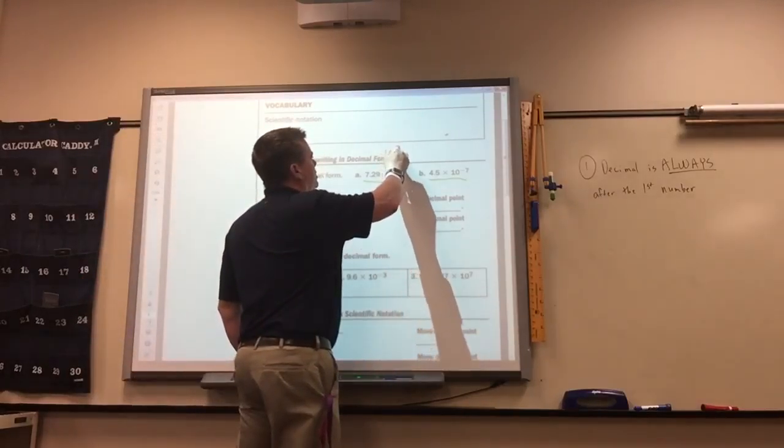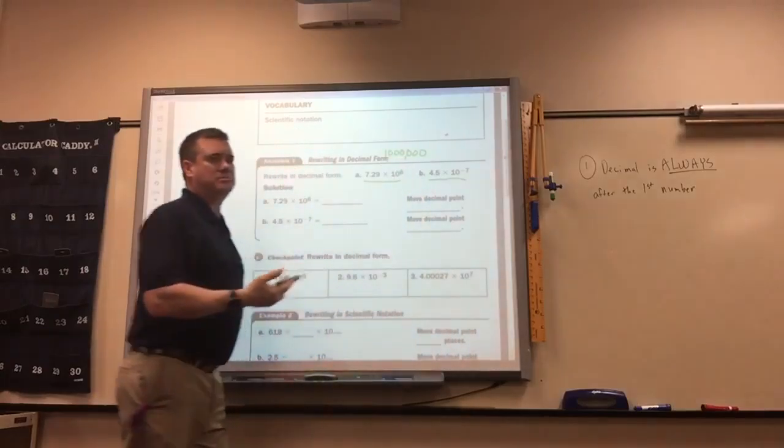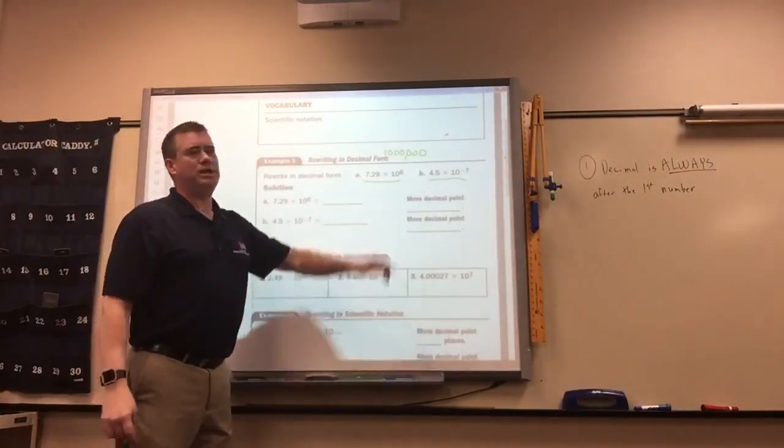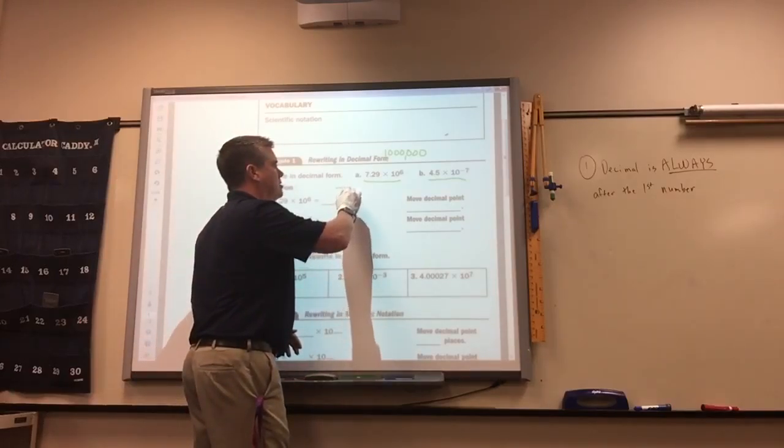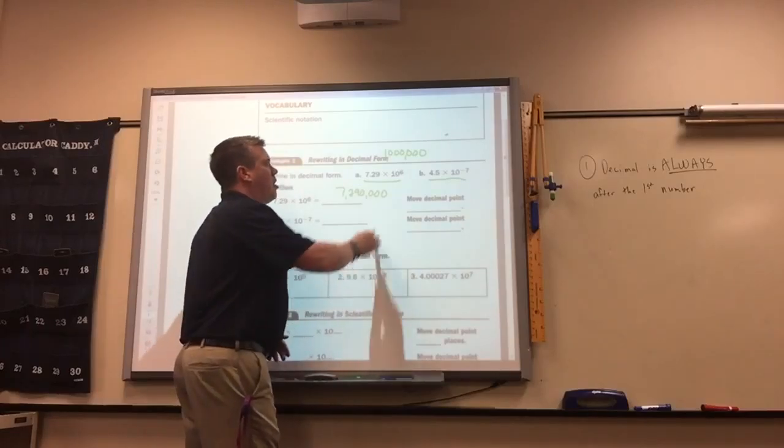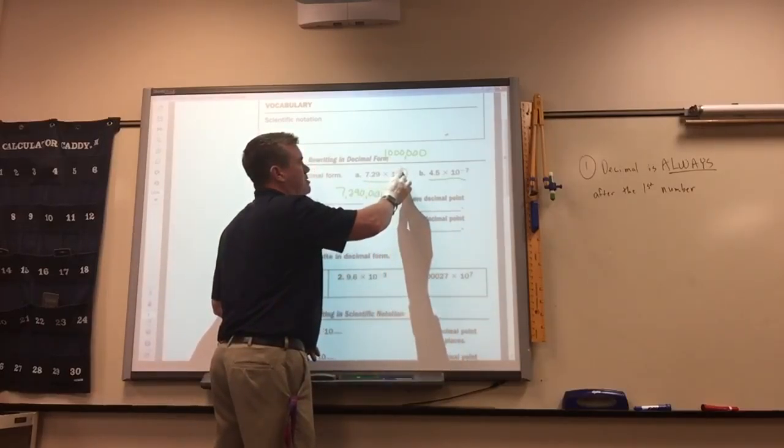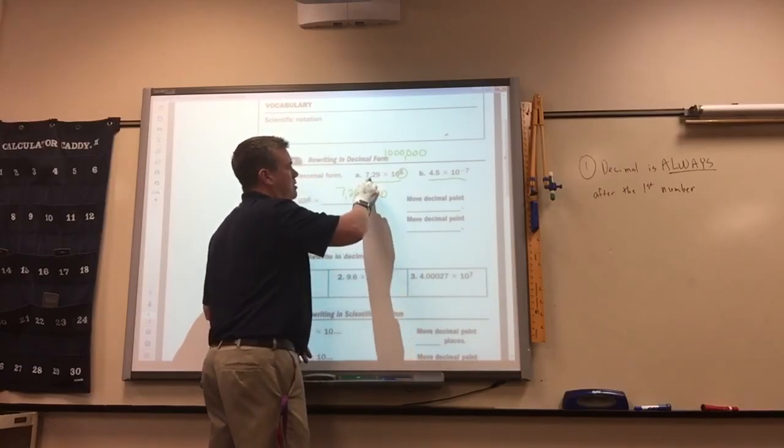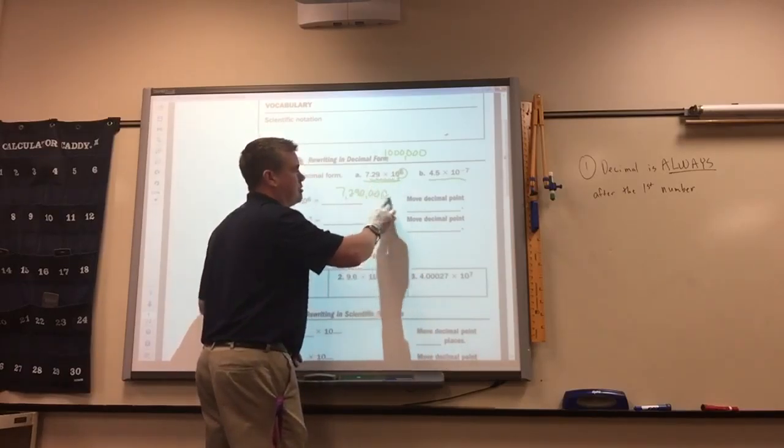10 to the sixth is a one with six zeros. It's one million. So 7.29 million is 7,290,000, right? All this tells you to do is move this decimal six spots, and since it's positive, you move it to the right. One, two, three, four, five, six, which means I had to fill in four zeros.